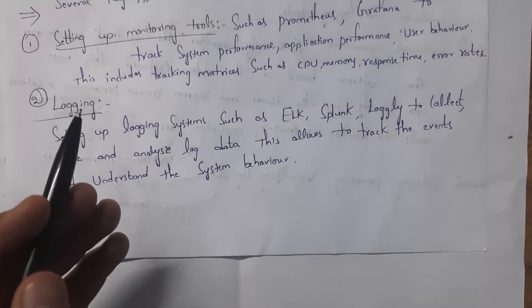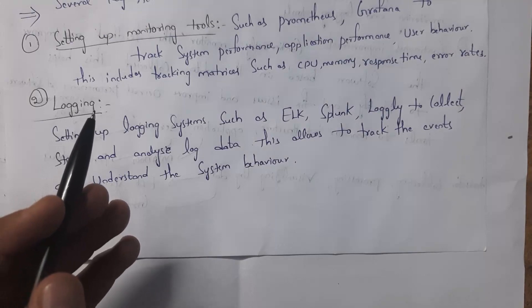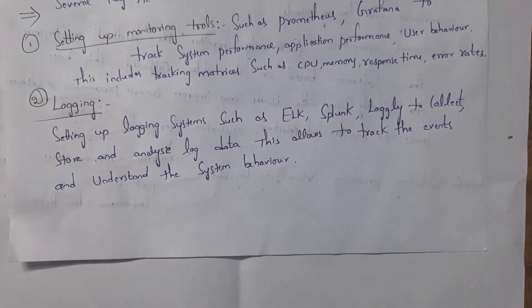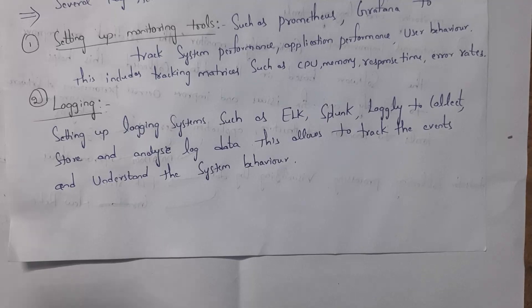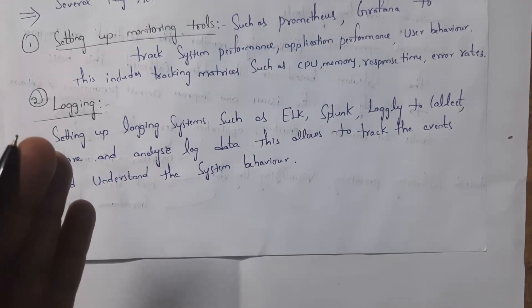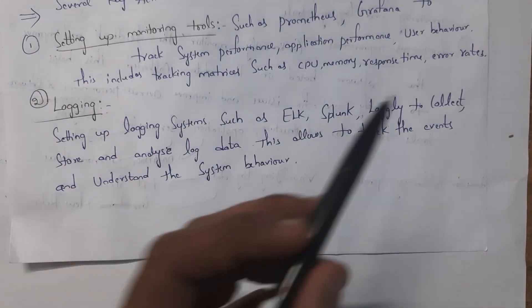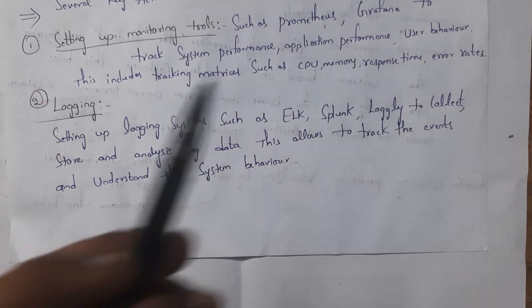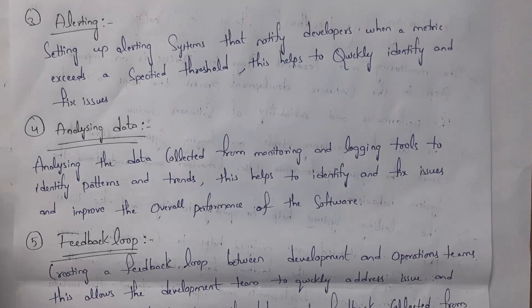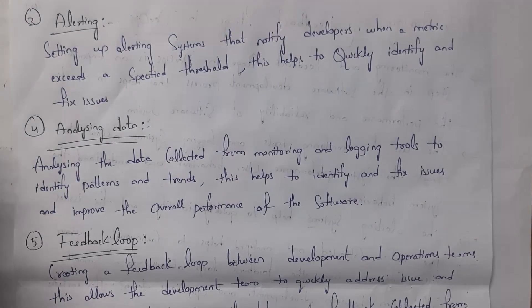The next activity is logging. Whenever any user logs into the software, complete information is stored in logging tools — what activity the user performed, how much time was spent on the software, and for what kind of user input, how the software is responding. Complete information is stored in logging tools. Various logging tools used in DevOps include ELK, Splunk, and others. Using these tools, we can collect, store, and analyze log data.